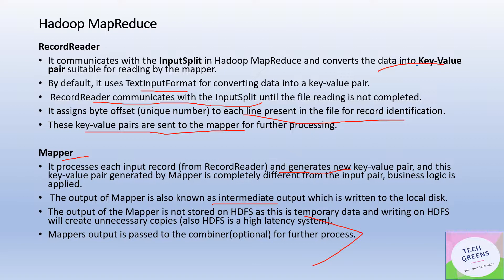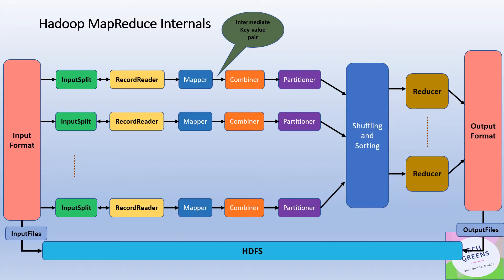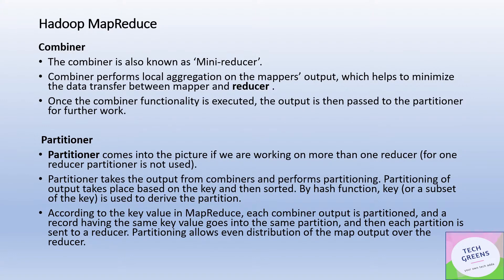The output of the Mapper goes to the Combiner, which is an optional phase. If a Combiner is configured for that MapReduce job, the data will go through it. The Combiner is also known as a mini-Reducer — it performs local aggregation on the Mapper's output. The idea is to minimize data transfer between the Mapper and the Reducer. It is an optional phase and helps reduce network data transfer. Once the Combiner executes, its output goes to the Partitioner.